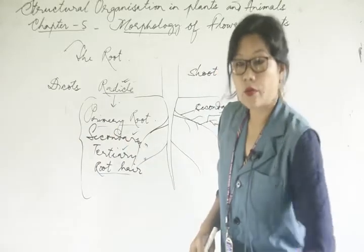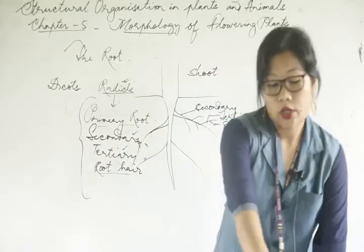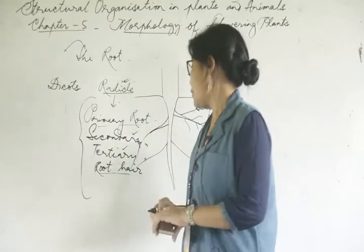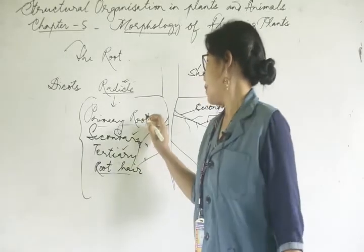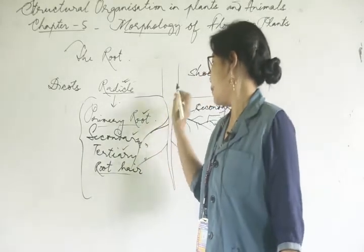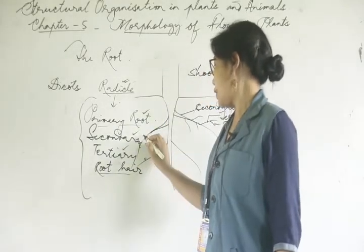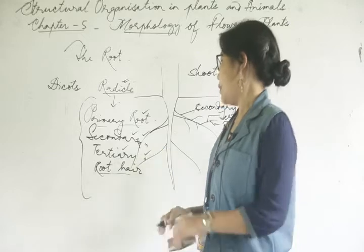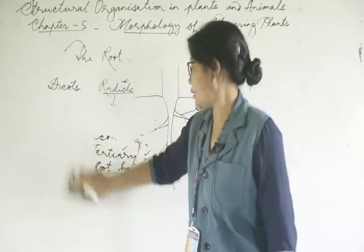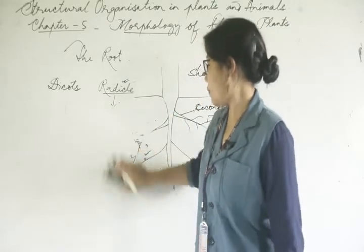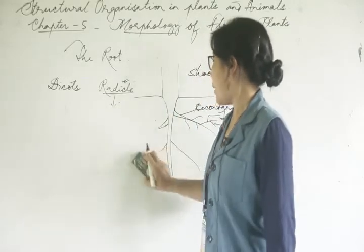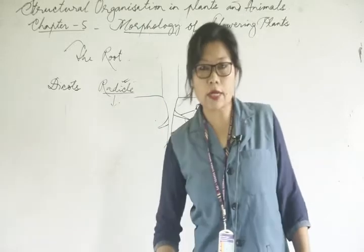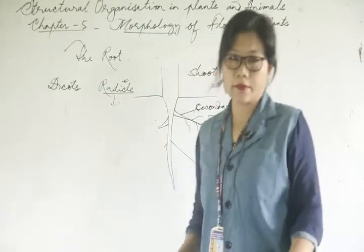In the case of monocots, you will not find these structures — that is, primary root, secondary, tertiary roots. Such structures are not found under monocot plants.